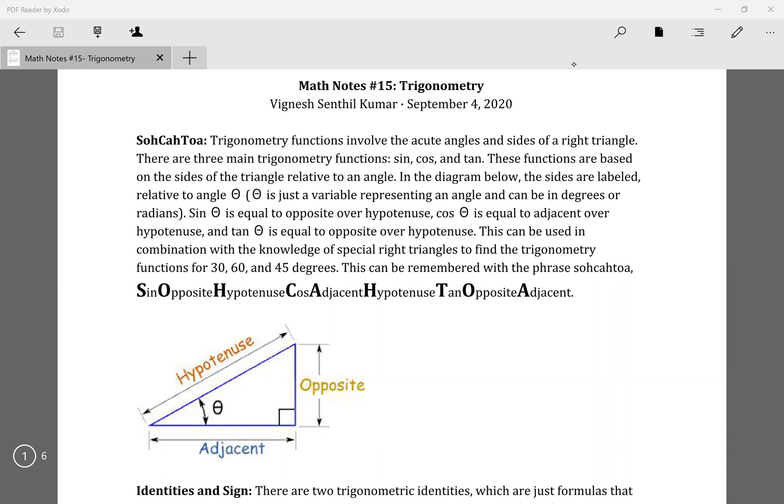The first of which is SOH CAH TOA, which represents the three main trigonometric functions: sine, cosine, and tangent. We write it as sin, cos, tan. If we have a triangle like we have right here, and again this is going to be a right triangle, because trigonometry really is associated with right triangles. You can have the sine of an obtuse angle, but if we're solving for a trigonometric function, we're usually using a right triangle.